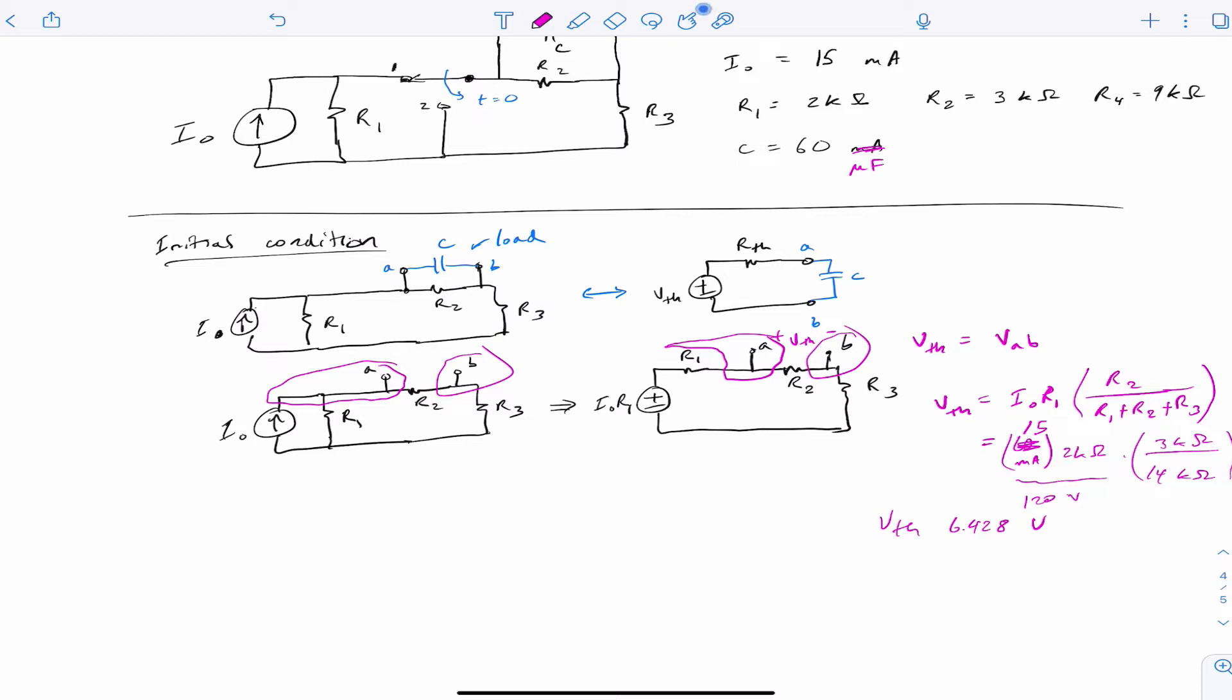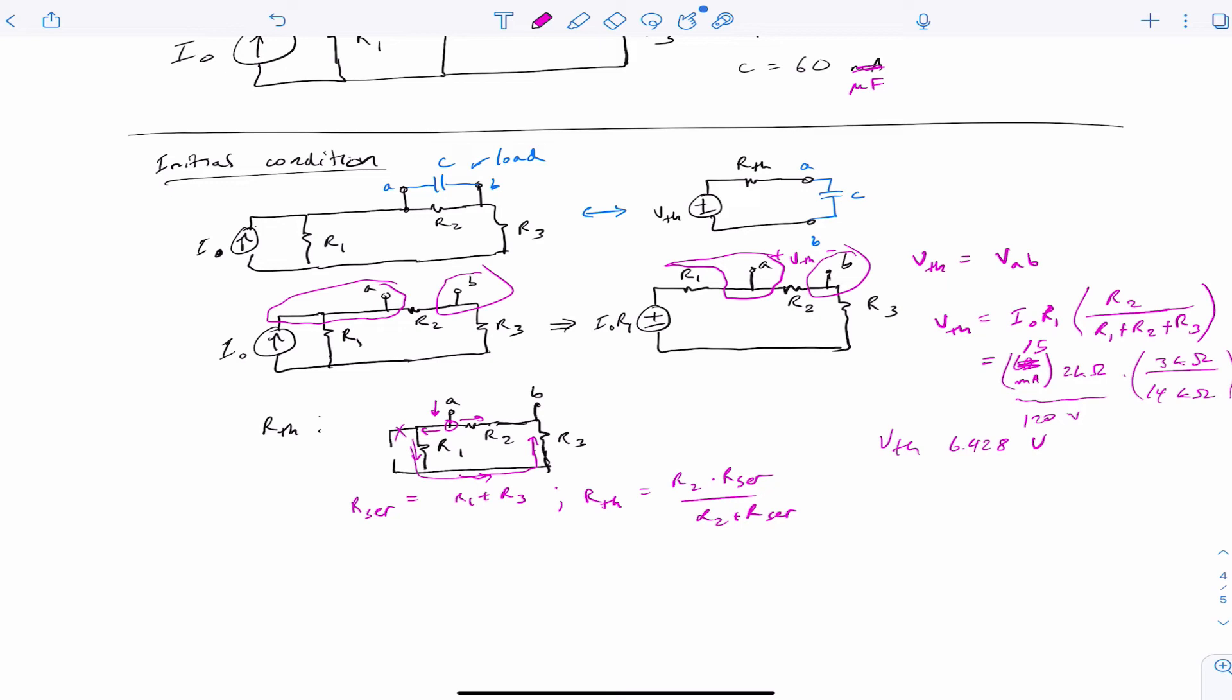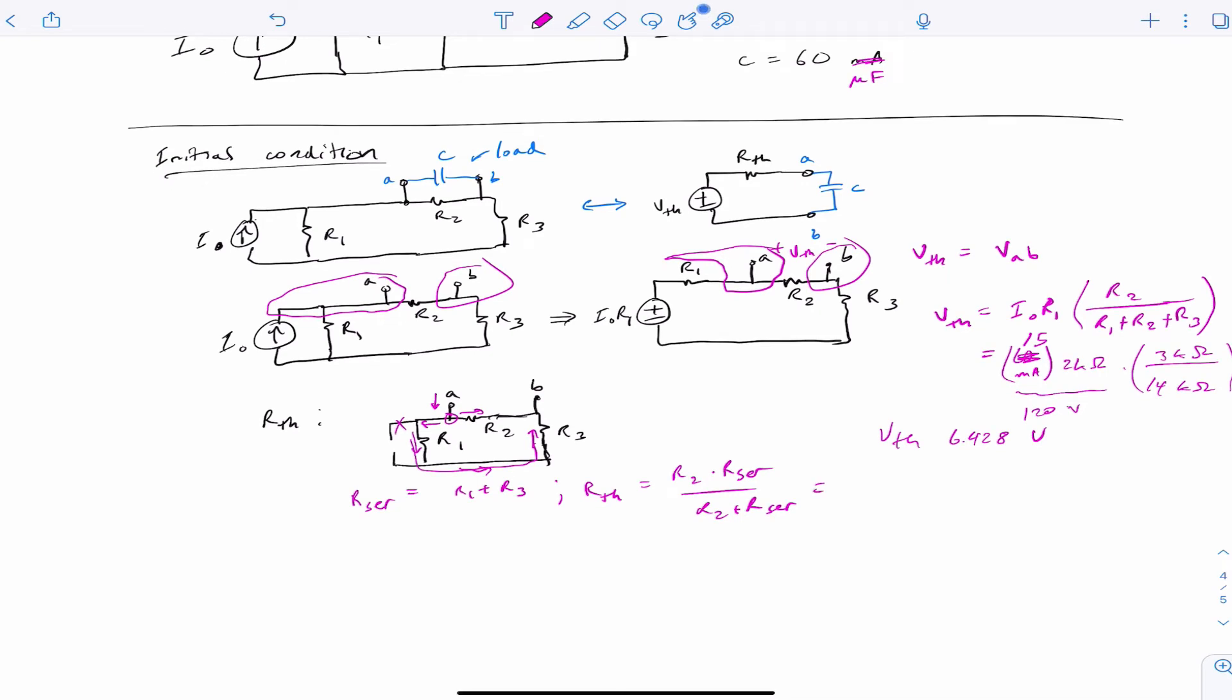We could find R Thevenin. It turns out it doesn't really matter a whole lot in this case, but let's do it anyway. We turn that current source down to zero, so we make it an open circuit. Now we think about injecting current here at A, and this highlights for us that there's no current going this way. Current has to go around, and it can split off here at A. So we've got R1 and R3 in series because current can take this path, and that path is in parallel with R2.